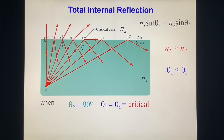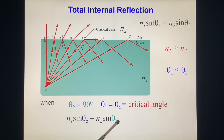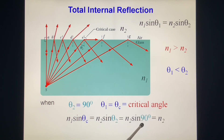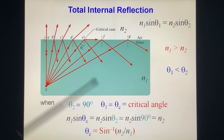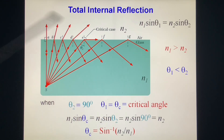We can find the critical angle easily. Since θ2 = 90 degrees, sin 90 = 1, and the critical angle θ_c = arcsin(N2 / N1). A trick to remember: sine is always smaller than 1, so N2 must be smaller than N1 — which matches the total internal reflection situation.